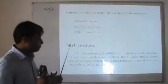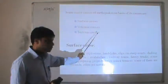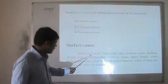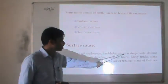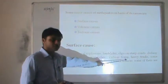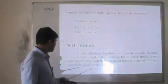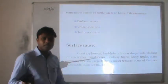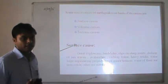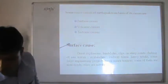The major causes of earthquake are surface causes, volcanic causes, and tectonic causes. Surface causes include great explosions, landslides, slips on steep coasts, dashing of sea waves, avalanches, heavy traffic, and some large engineering projects. Man-made causes include detonation of mines to extract natural resources, such as marble mines and coal mines.